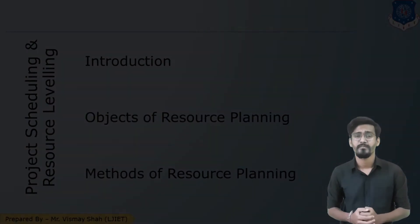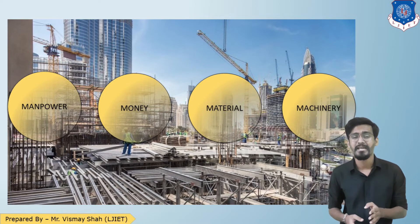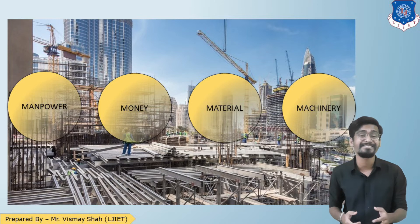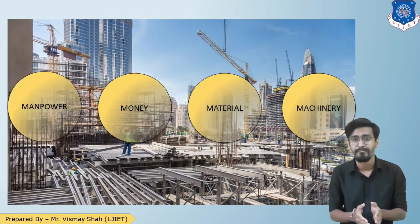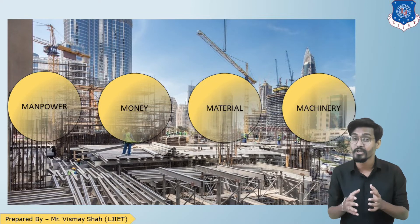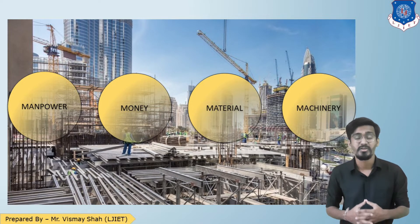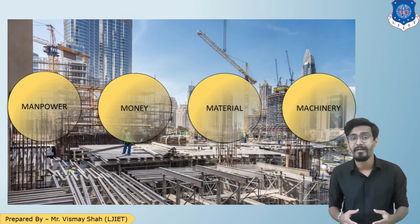To do any construction work we require four kinds of resources: Man, Money, Material, and Machinery. When we were doing analysis by CPM or PERT method, our only focus was on time — we were only using time analysis to determine in what time a project will be completed. But in real-time situations it may happen that the number of resources available is very limited.